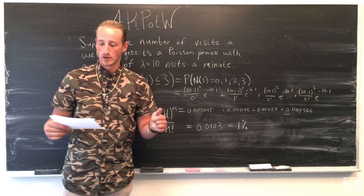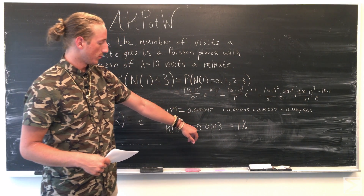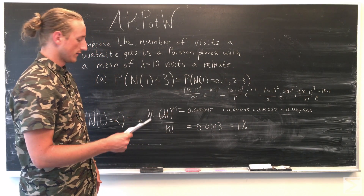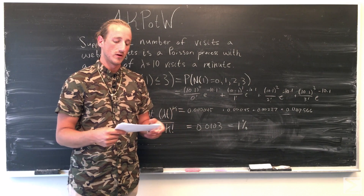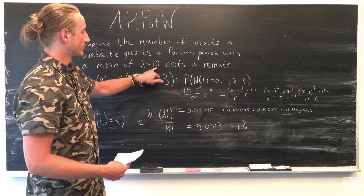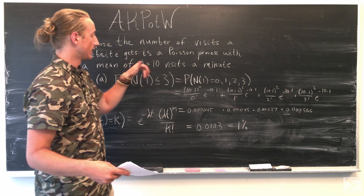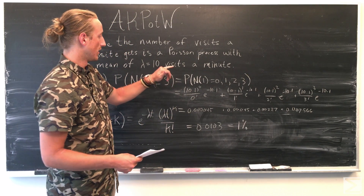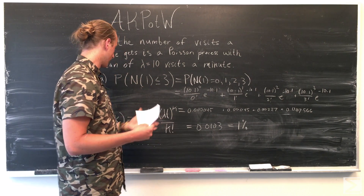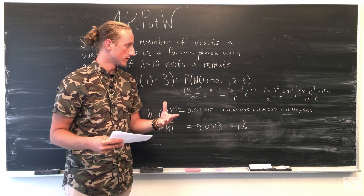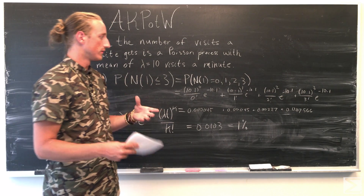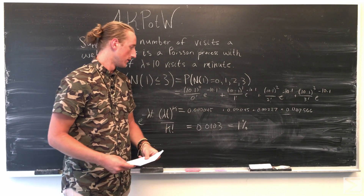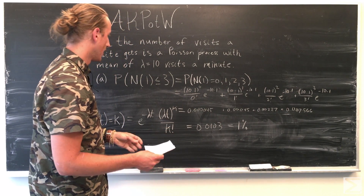Part A gives us 0.0103 as the probability, which is about 1%. That means there's a 1% chance of fewer than three visits in the first minute. Because we know the mean is 10 visits a minute, three or fewer visits is way below our average. So with this Poisson process, we can determine how far a value varies from the mean and the probability of that occurring.